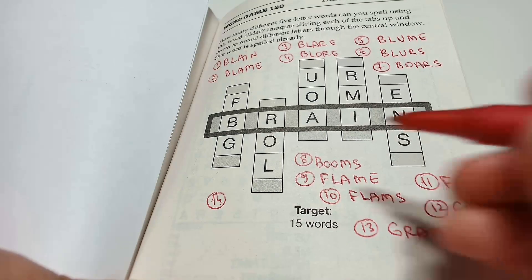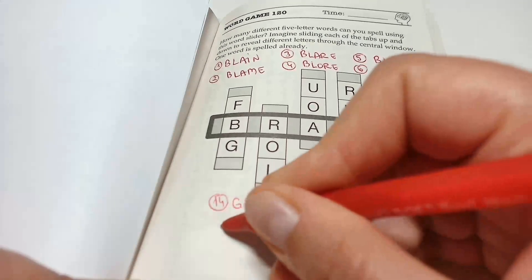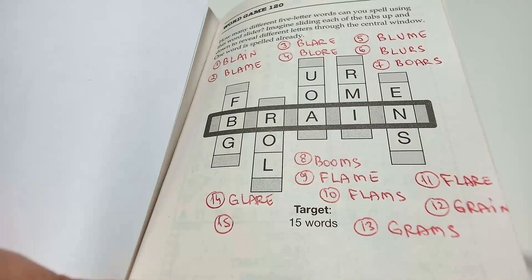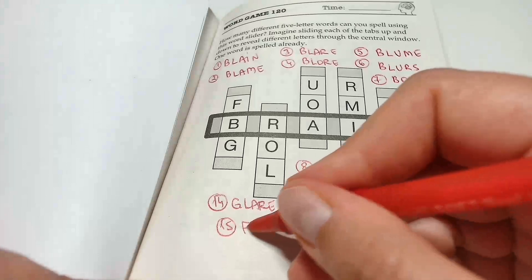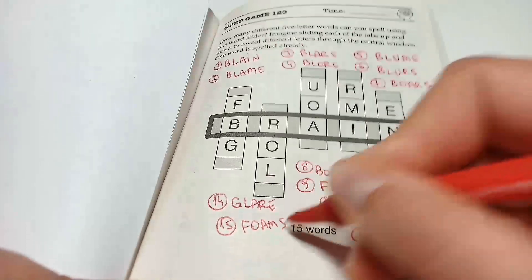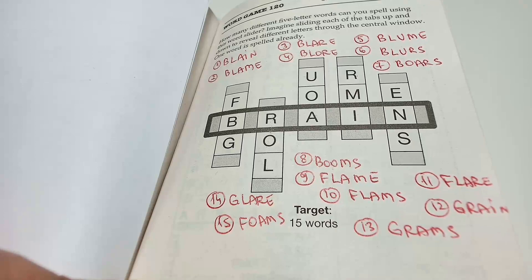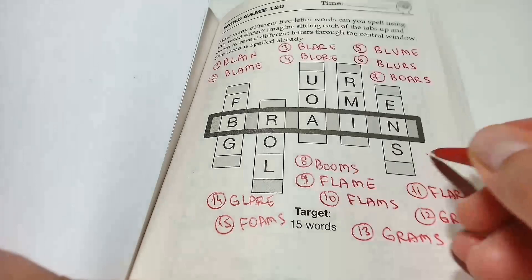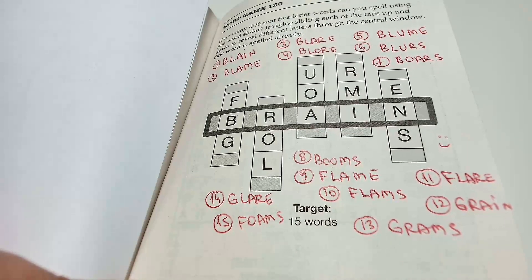14, glare. And one more, one more, one more. Oh, flames! I think there are more words hidden here. Try to find the others as well. Have a lovely day. If you liked this challenge, please subscribe for more.